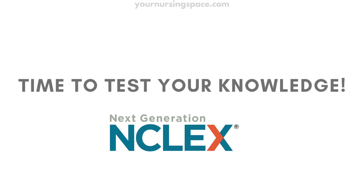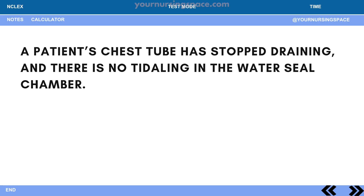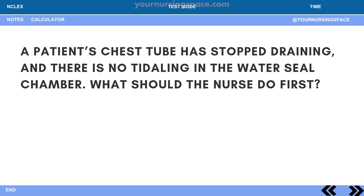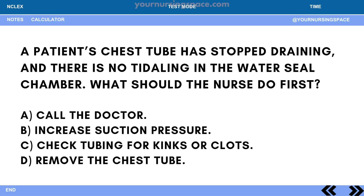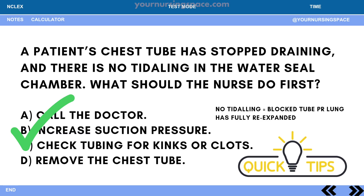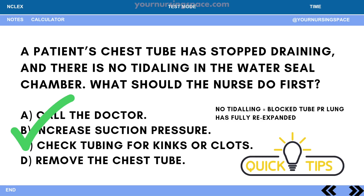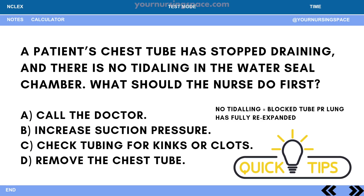Time to test your knowledge with NCLEX questions. A patient's chest tube has stopped draining and there is no tidaling in the water seal chamber. What should the nurse do first? A: Call the doctor. B: Increase suction pressure. C: Check tubing for kinks or clots. D: Remove the chest tube. The correct answer is C. No tidaling usually means the tube is blocked or the lung has fully re-expanded. NCLEX tip: never clamp the chest tube unless ordered, as it increases the risk of tension pneumothorax. Also remember: continuous bubbling in the water seal chamber means an air leak — check all connections.